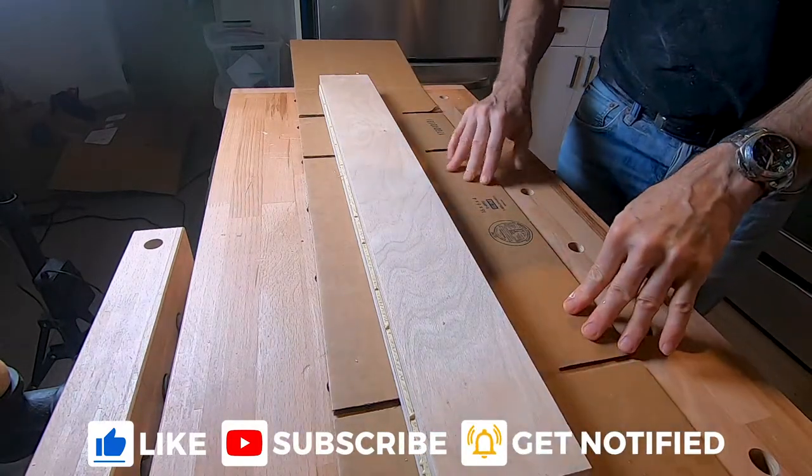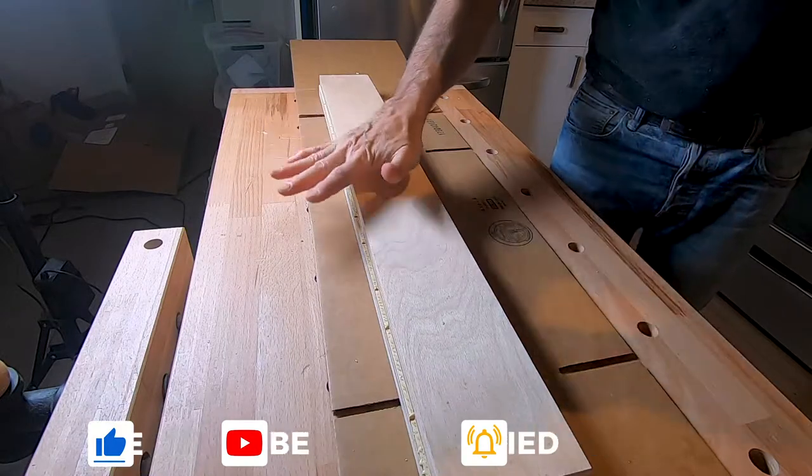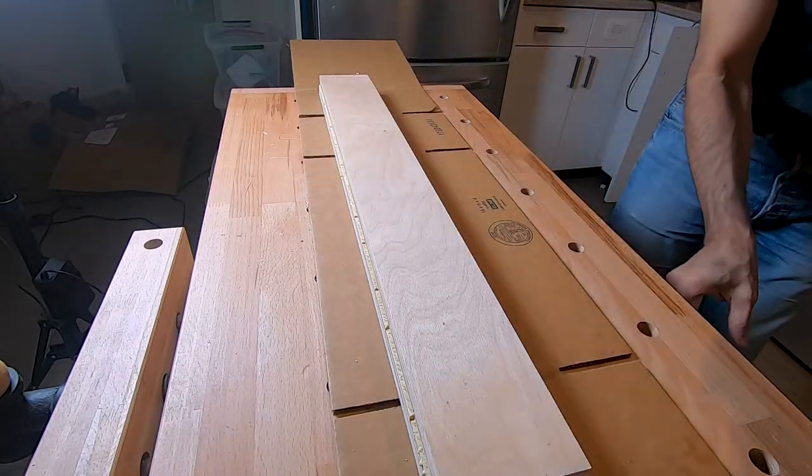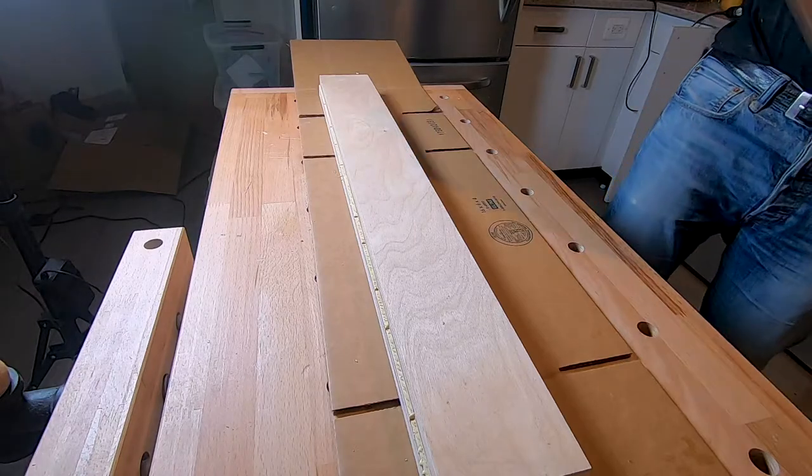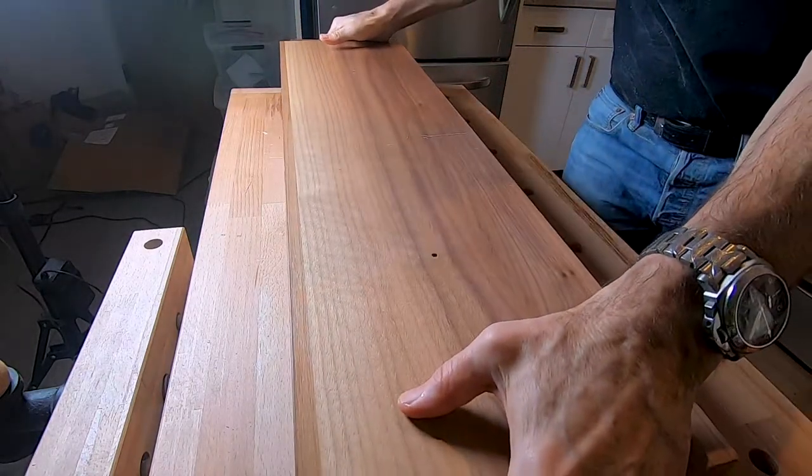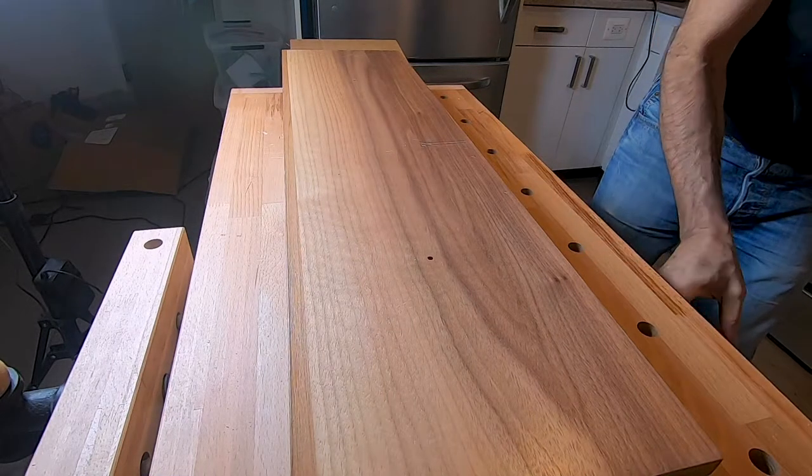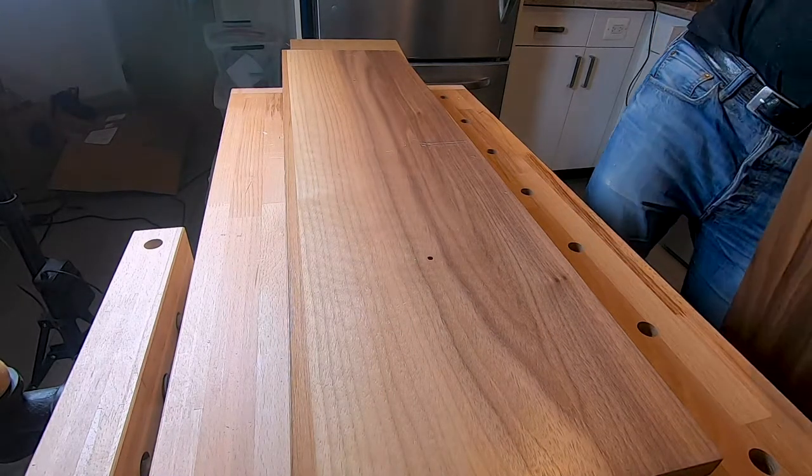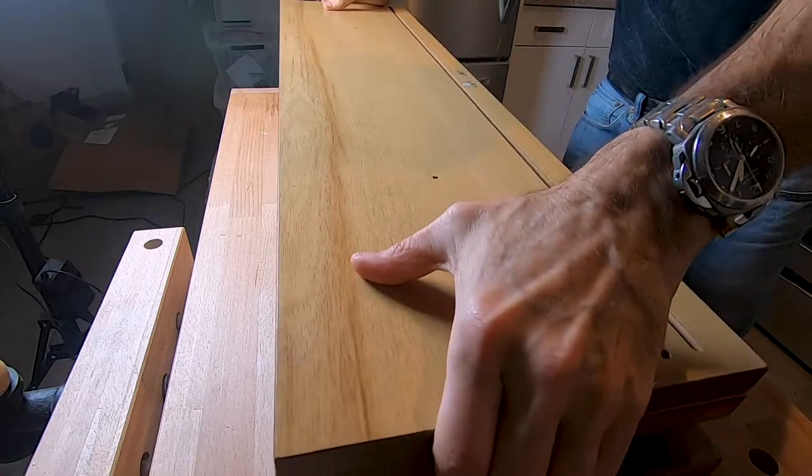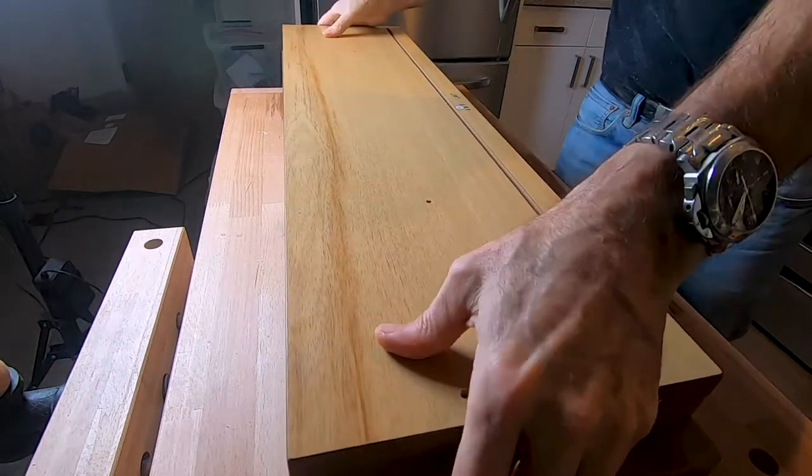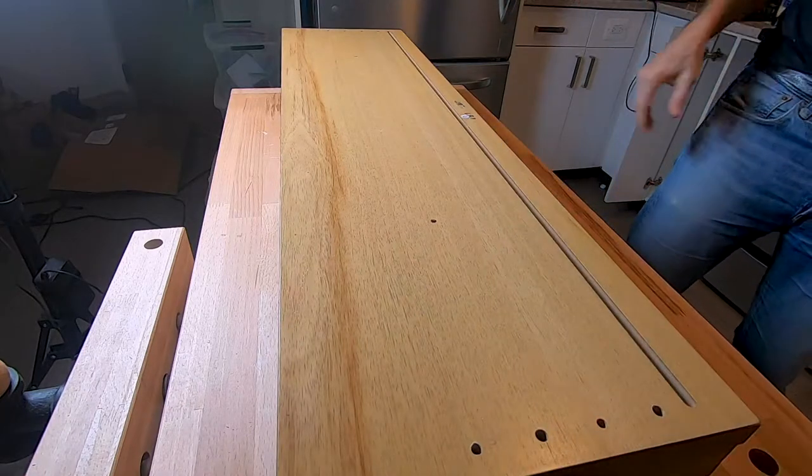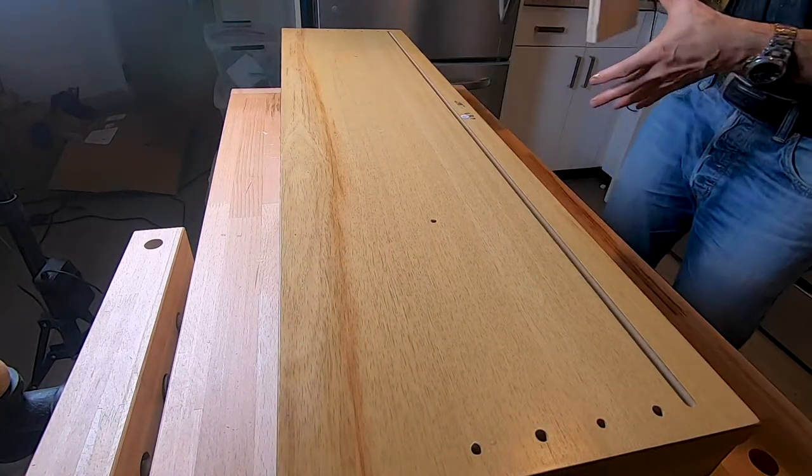For a layup like this that involves flattening, I like to just keep it flat instead of using clamps. Just use flat surfaces and weight. That's how you make a straight fence out of bowed plywood.